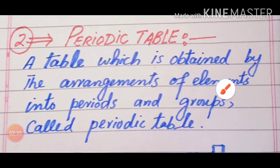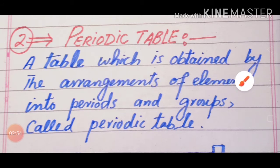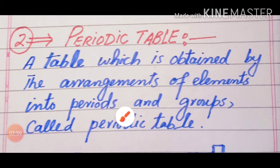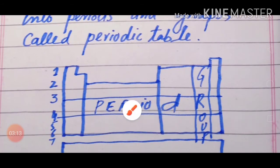How will you define the Periodic Table? You can define the Periodic Table as: a table which is obtained by the arrangement of elements into periods and groups is called the Periodic Table. So here you are defining the Periodic Table — it consists of periods and groups.